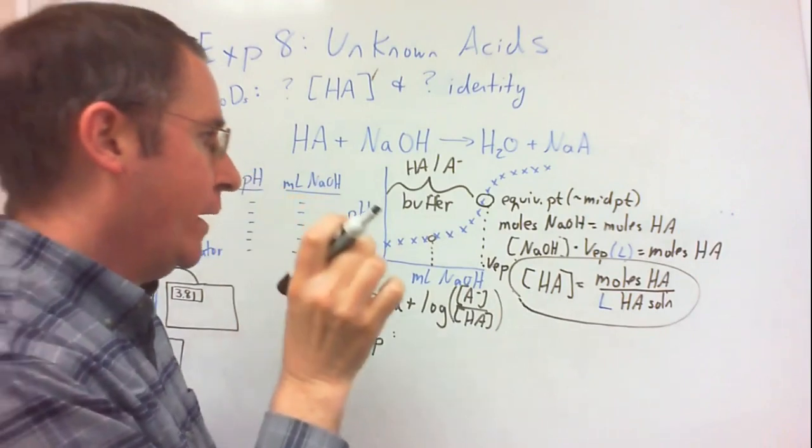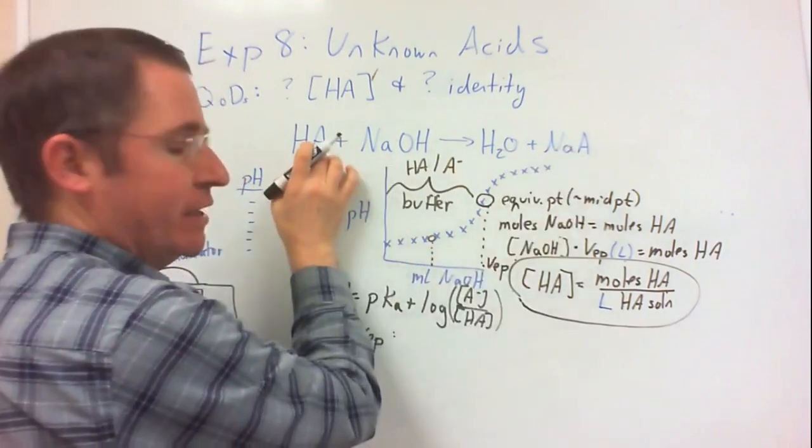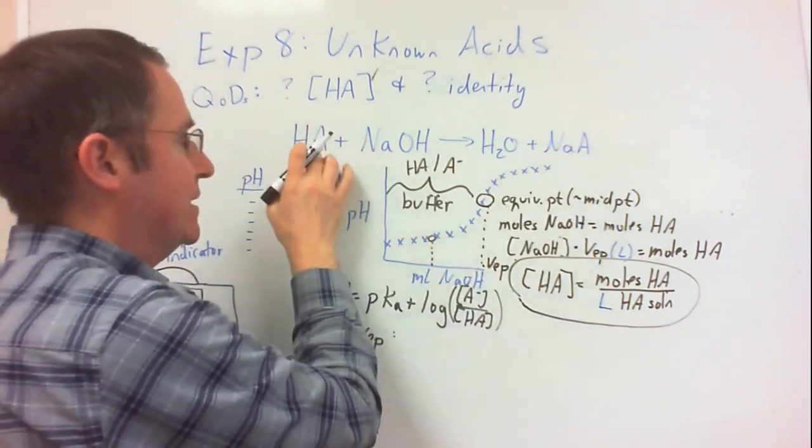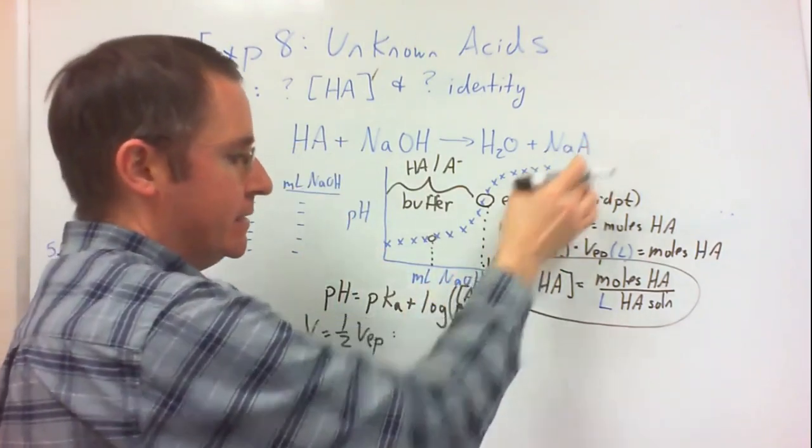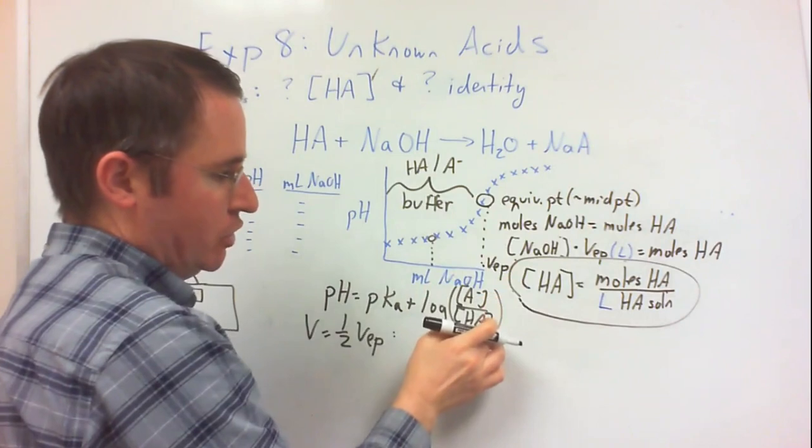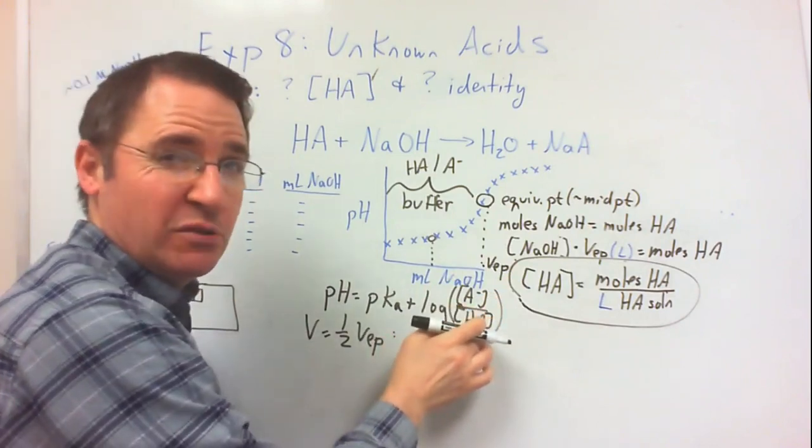Consequently, at that point, the concentration or the amount of weak acid left is the same as the concentration or amount of the conjugate base. So therefore, this ratio is equal to 1, log of 1 is equal to 0.